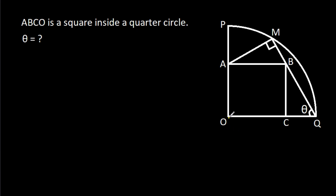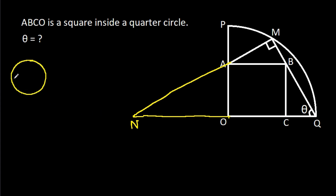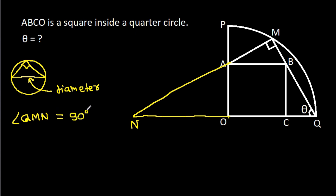If we extend QO and MA, suppose this point is N, then in any circle, a diameter makes an angle of 90 degrees on the circle. Here, angle QMN is equal to 90 degrees, so QN will be the diameter.